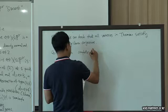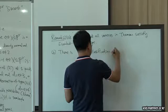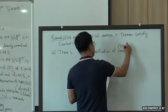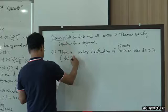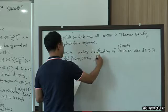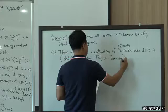Moreover, there is a complete classification of smooth projective varieties with degree equal to E plus 3, due to Del Pezzo, Veronese, Fujita, and Ionescu.